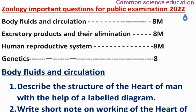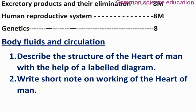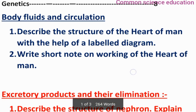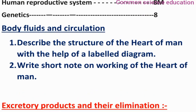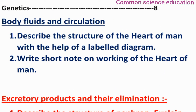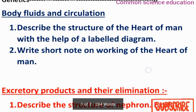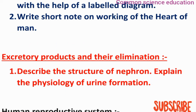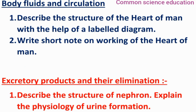First, from Body Fluids and Circulation, the important 8-mark question is: 'Describe the structure of the heart of a man with the help of a labelled diagram,' and 'Write a short note on the working of the heart of a man.' From the next unit, Excretory Products and Their Elimination: 'Describe the structure of the nephron and explain the physiology of urine formation.'